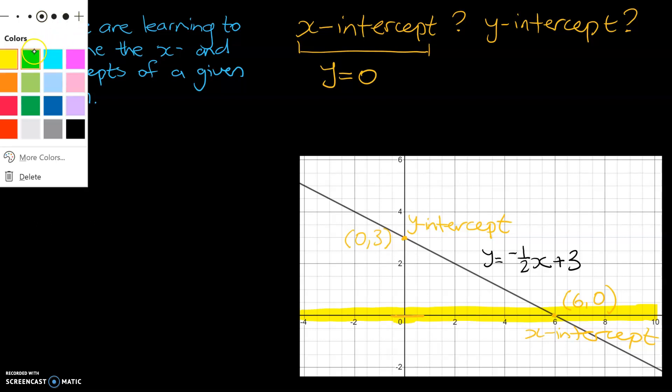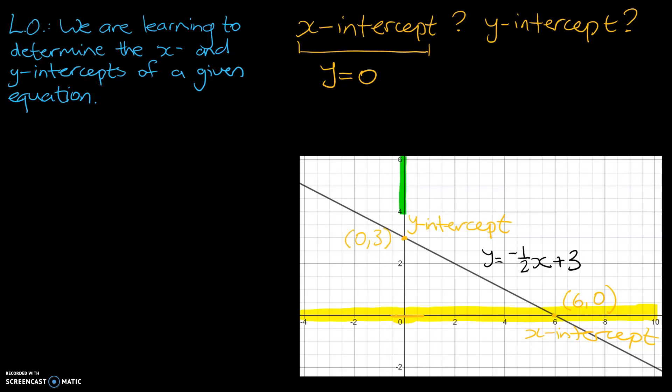And alternatively, the thing we always know about the y-axis is that the corresponding x-value is also going to be 0. So we know for our y-intercept, that x is going to be equal to 0. We can use these properties to determine the x- and the y-intercepts.